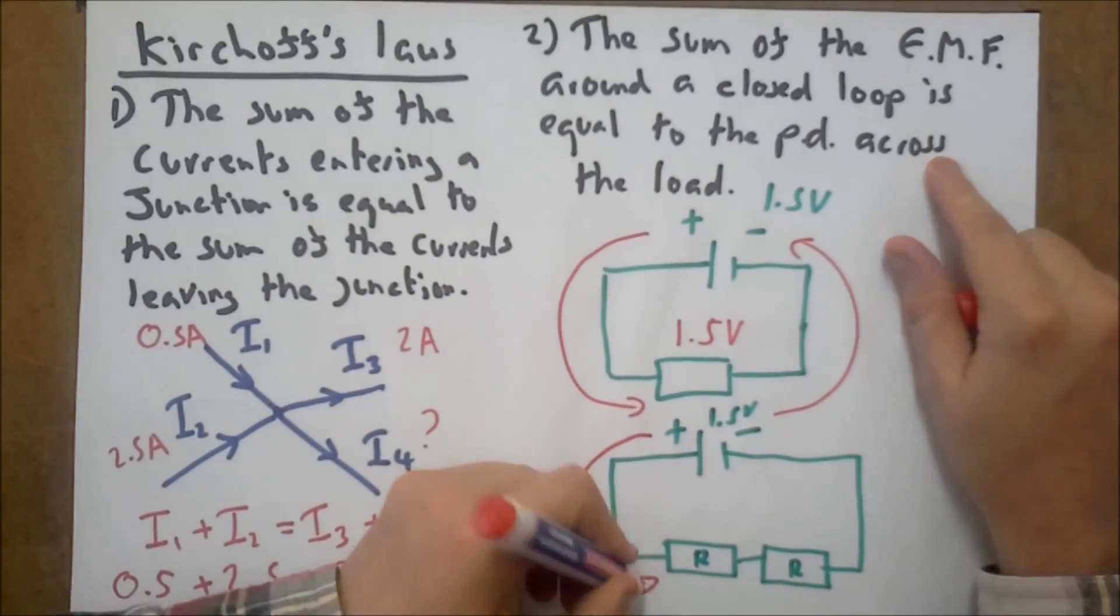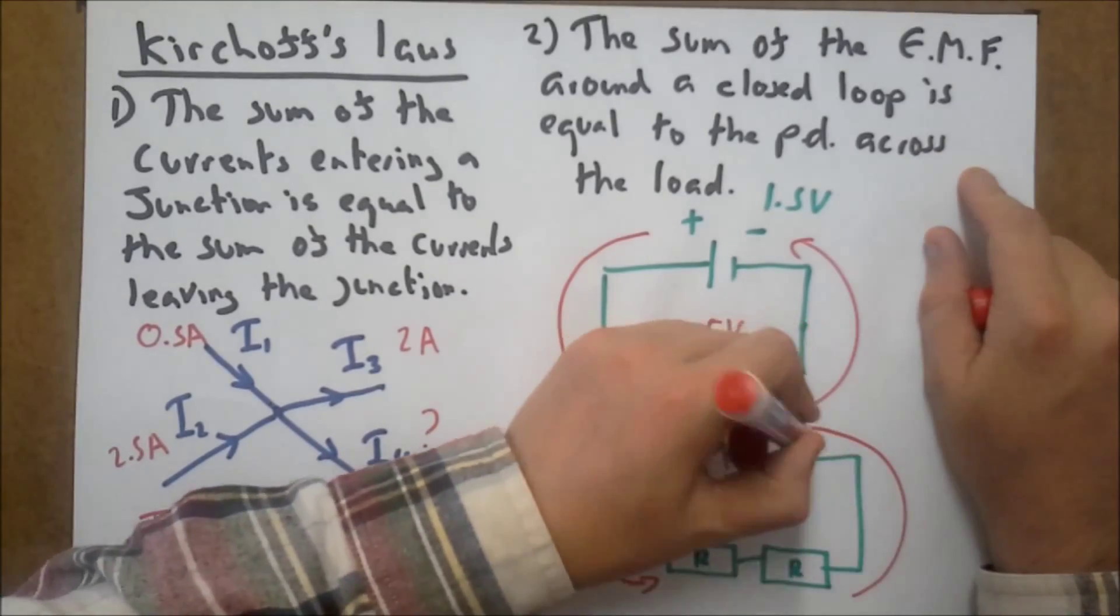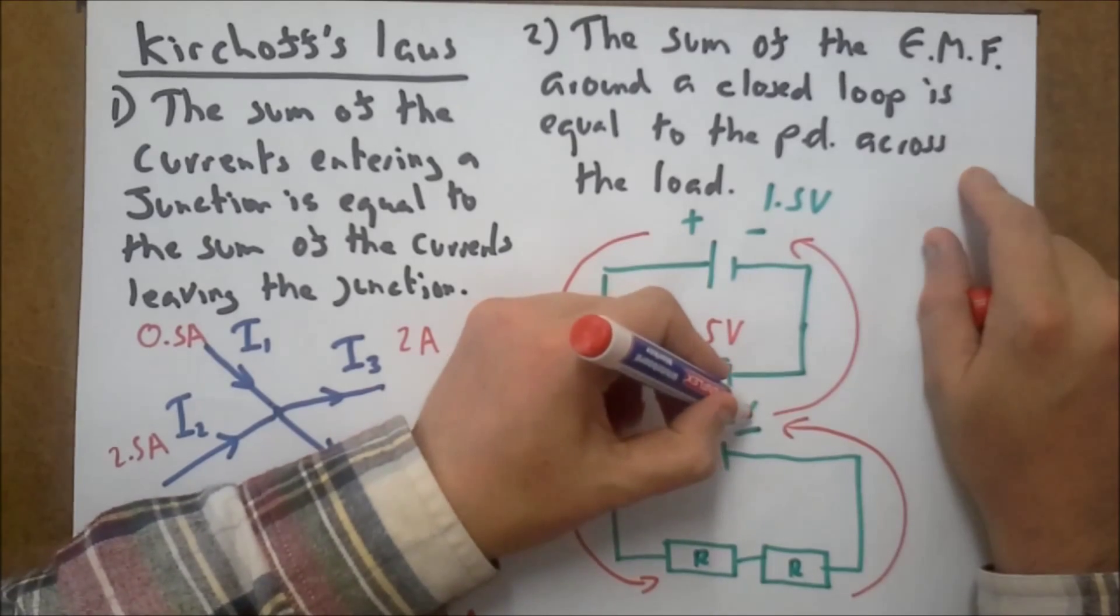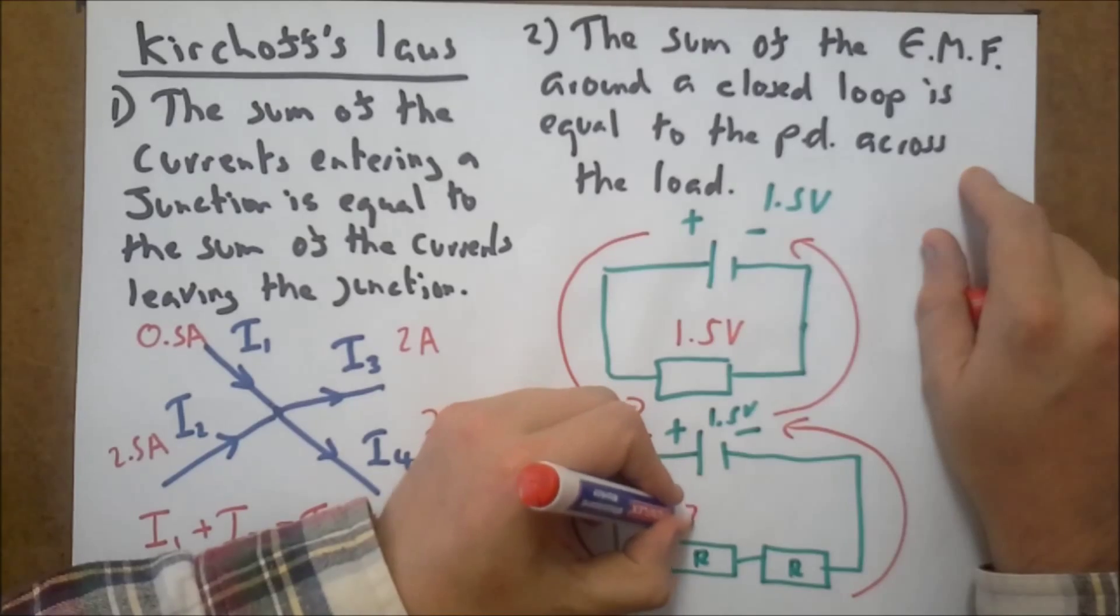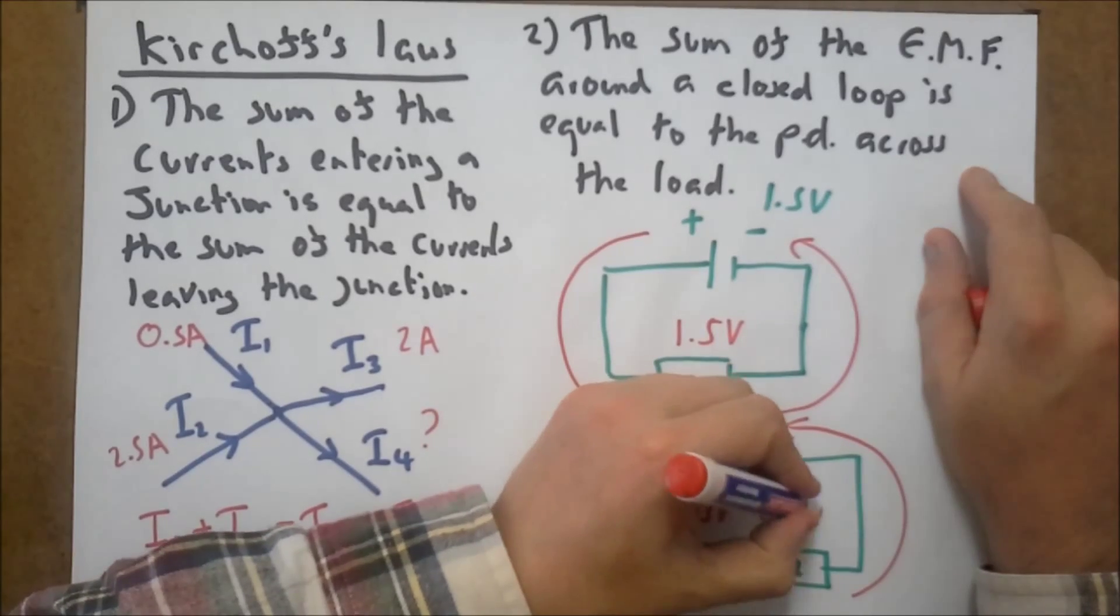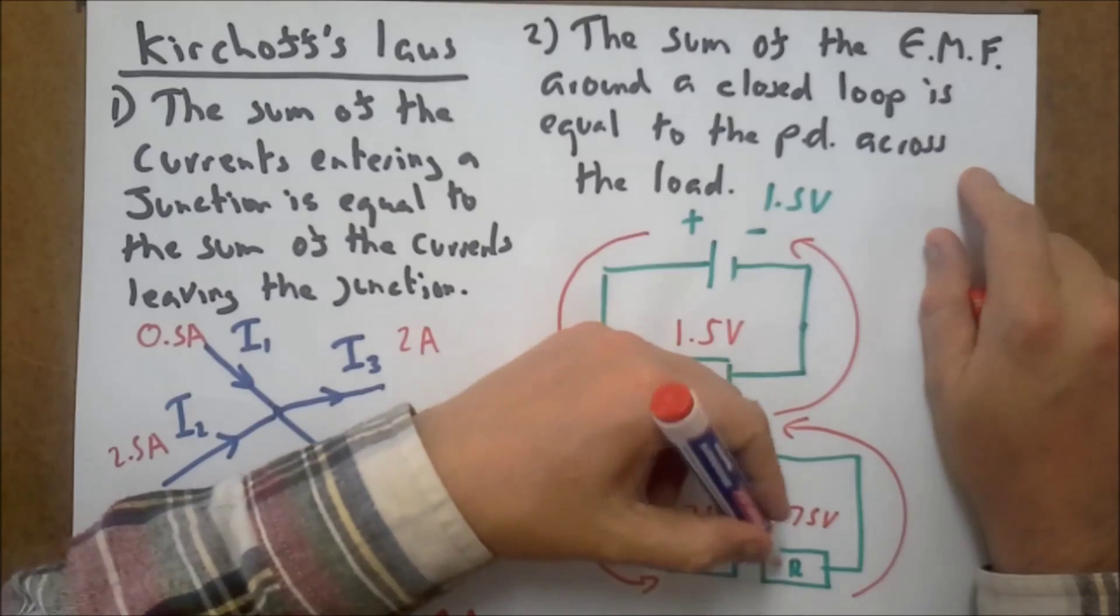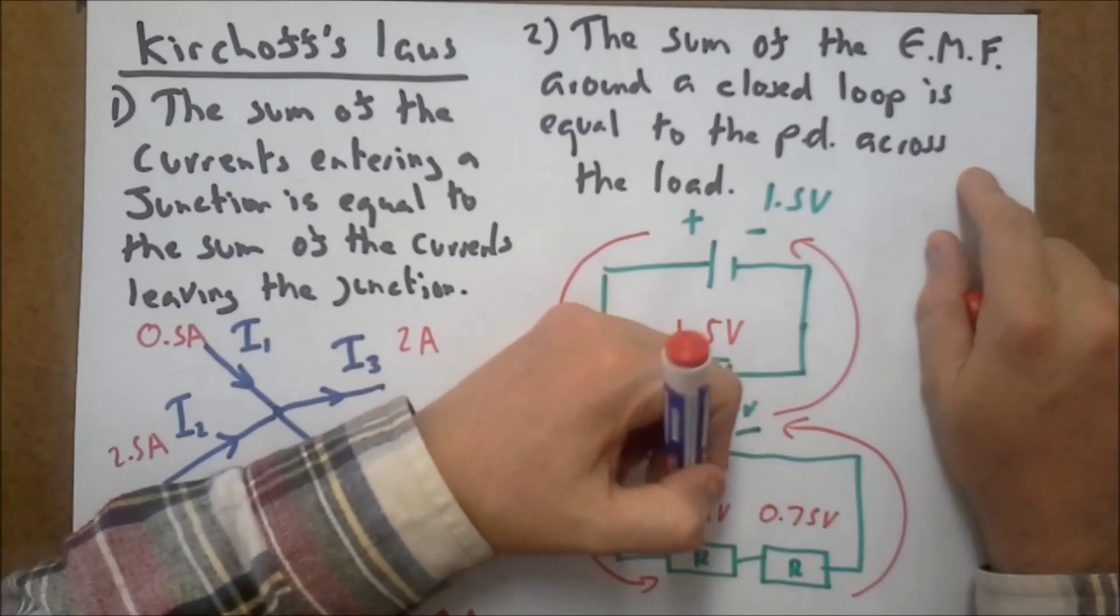Around this closed loop here, we're going to have 1.5 volts going into our system. Therefore, that voltage is going to be shared equally between these two resistors, because they've got an equal value.